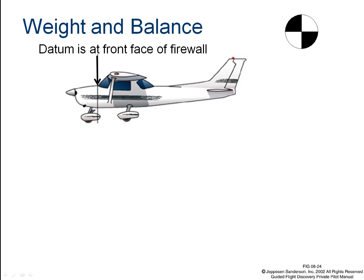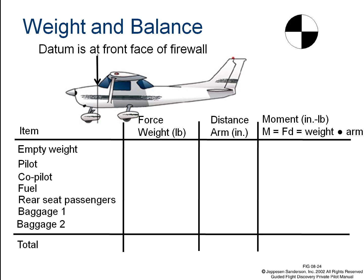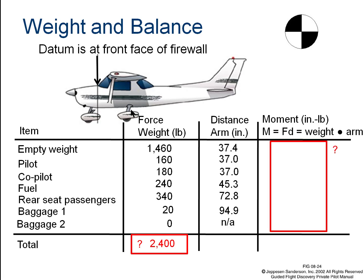Here's our datum at the front of the firewall, and we measure things back from that. We put it in a chart: the weight and how far aft of the firewall it is. For example: empty weight of the airplane is 1,460 pounds at 37.4 inches aft; the pilot is 160 pounds at 37 inches; the co-pilot is 180 pounds at the same location; fuel is 240 pounds slightly aft; rear seat passengers are 340 pounds further back; and baggage is 20 pounds way back in the tail.